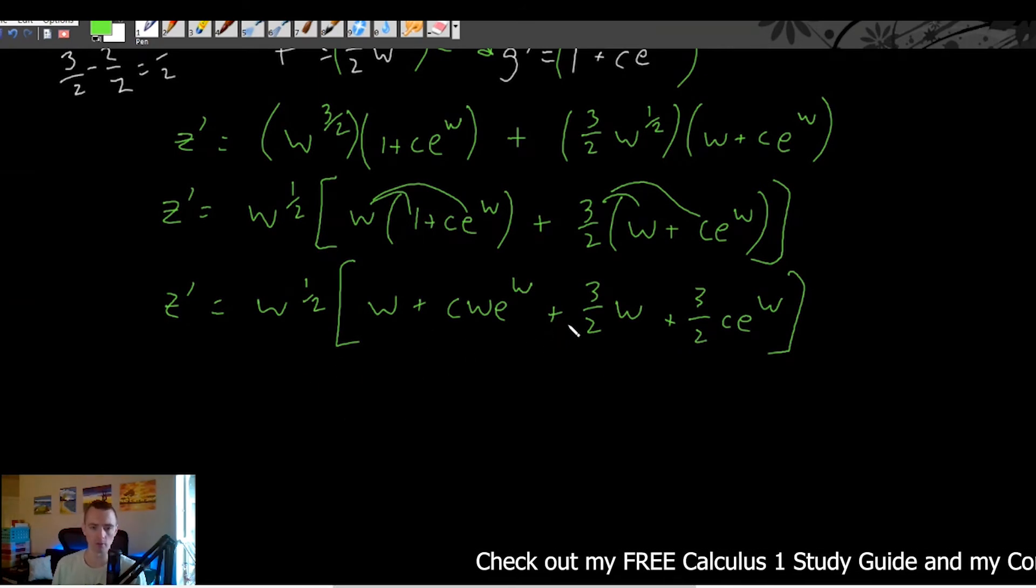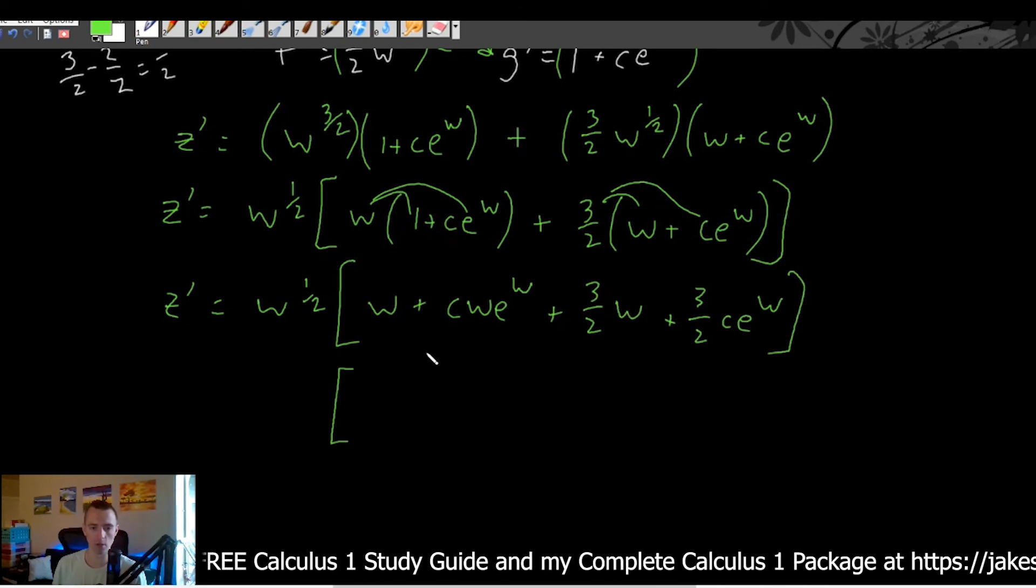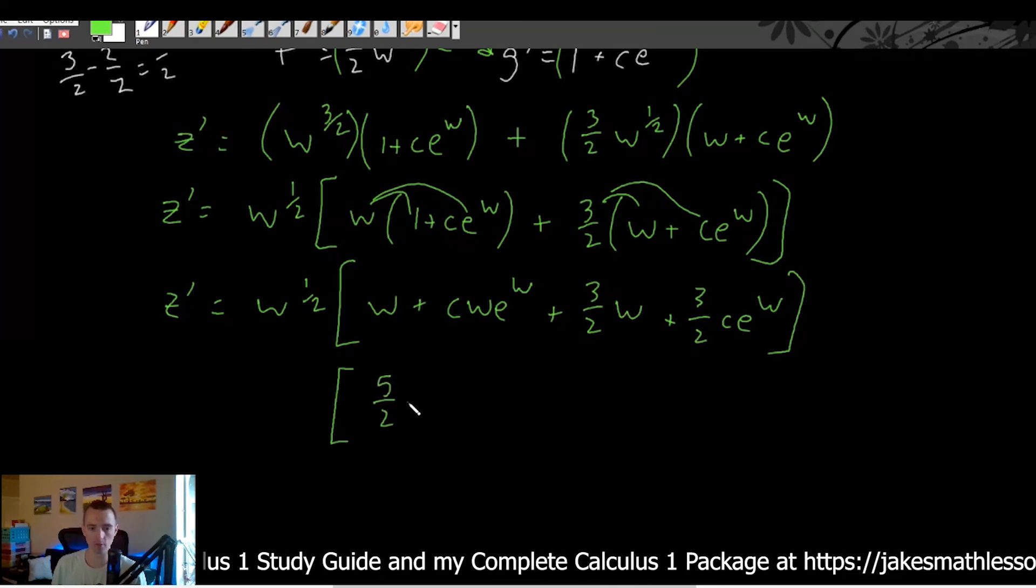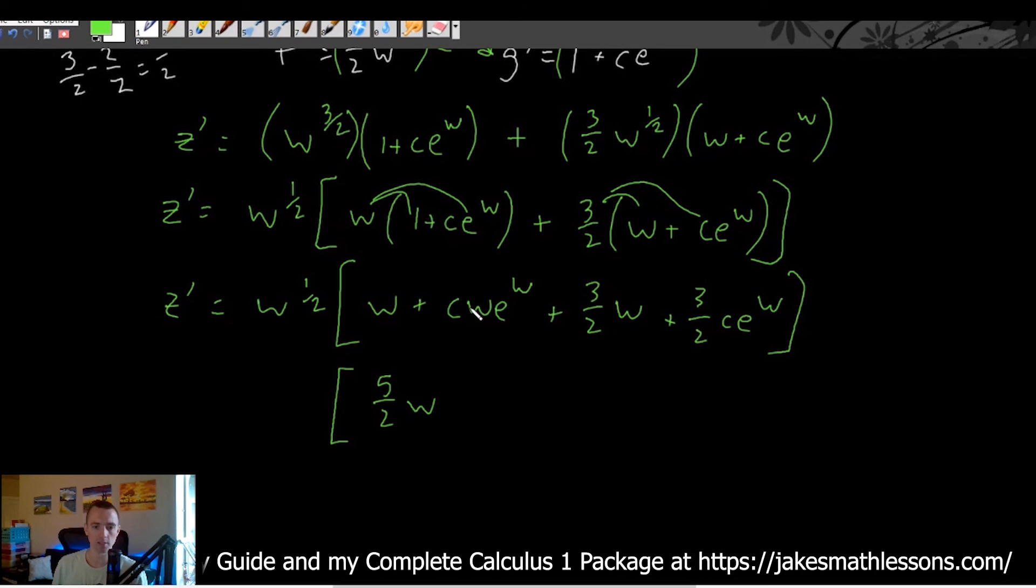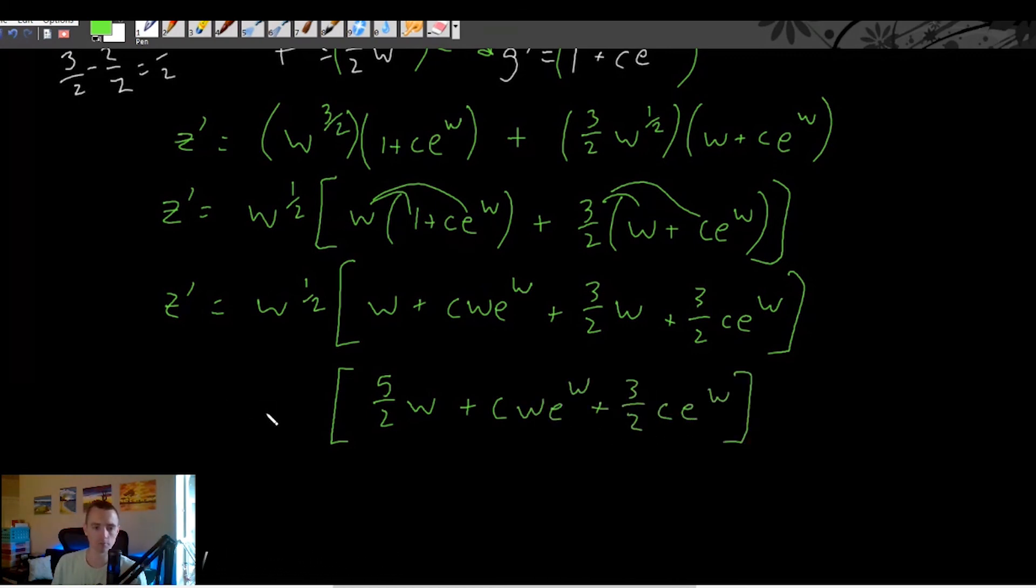So first of all, we have a w plus a three halves w. So those could combine into a five halves w. And then cw to the e w three halves c, these aren't going to be able to combine, right? This one has a w, this one doesn't, those aren't going to nicely combine. So we're just going to be left with each of those being added in here as well.